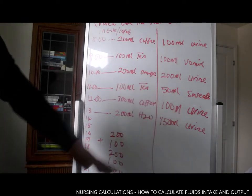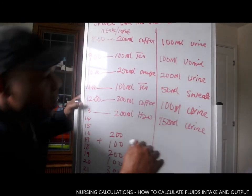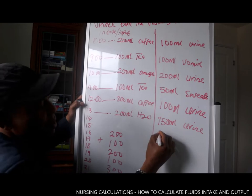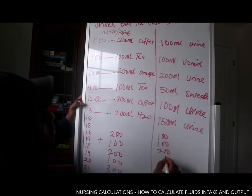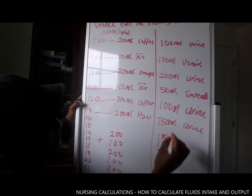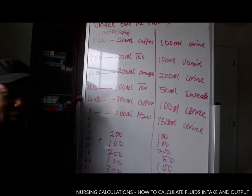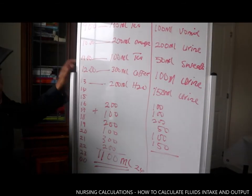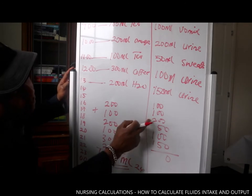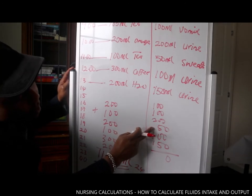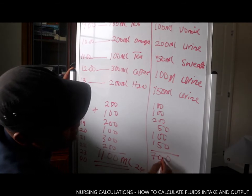They may ask you to calculate the balance to see whether Vena is in positive or negative balance. So we add everything together: 100, plus 100, plus 200, plus 50, plus 100, plus 150 — that's six values. Adding them up: 100, 200, 400, 450, 550, 650 — so the total is 700ml.